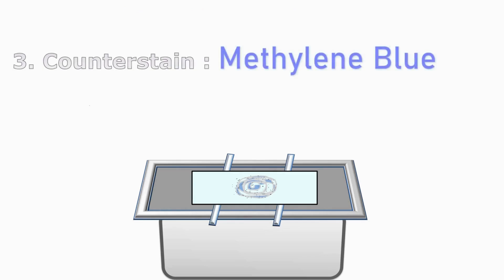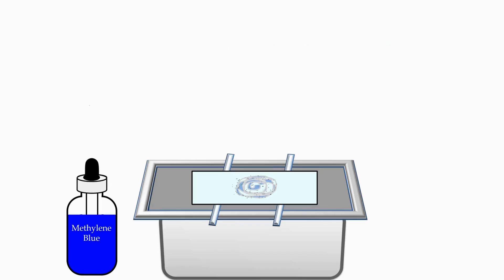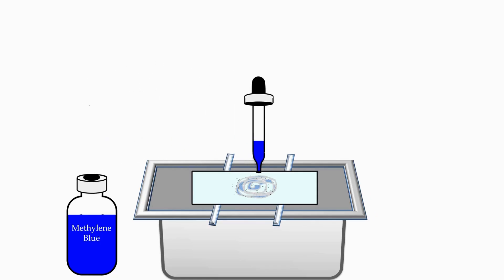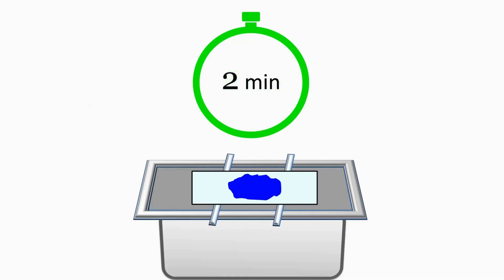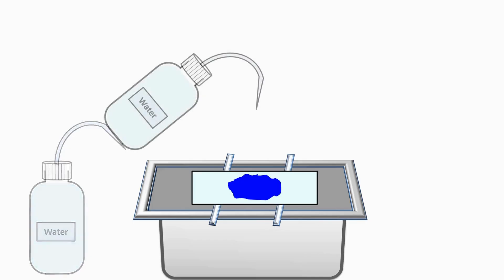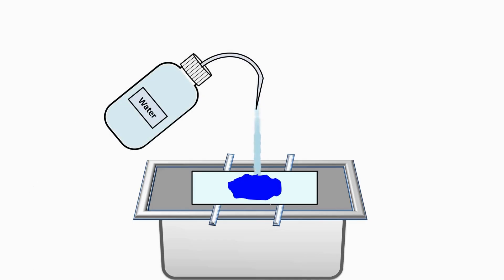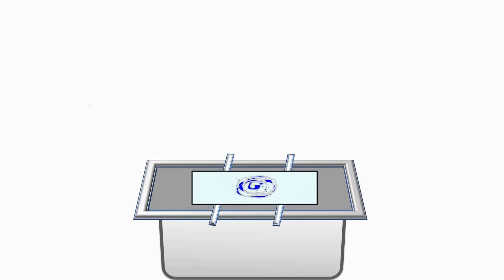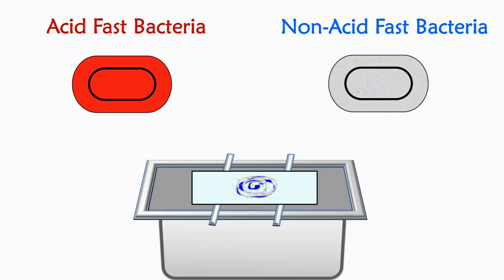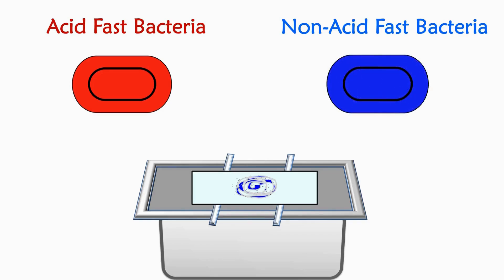The third reagent we are going to add is methylene blue, which acts as a counterstain. Take out methylene blue with a dropper, flood the smear with methylene blue, and wait for 2 minutes. After 2 minutes, wash the excess stain from the slide with water. Only non-acid-fast bacteria, which are colorless, get stained with methylene blue and appear blue in color, whereas acid-fast bacteria do not take up the methylene blue and remain red colored.